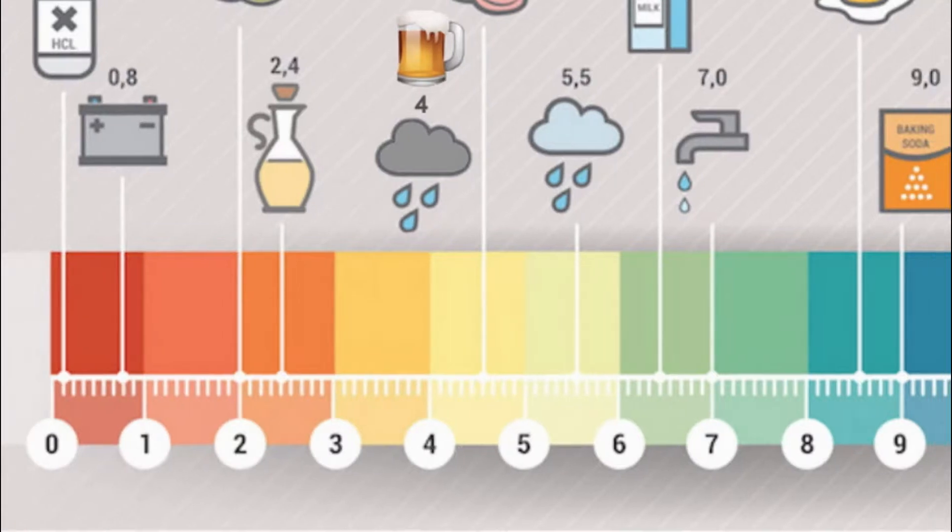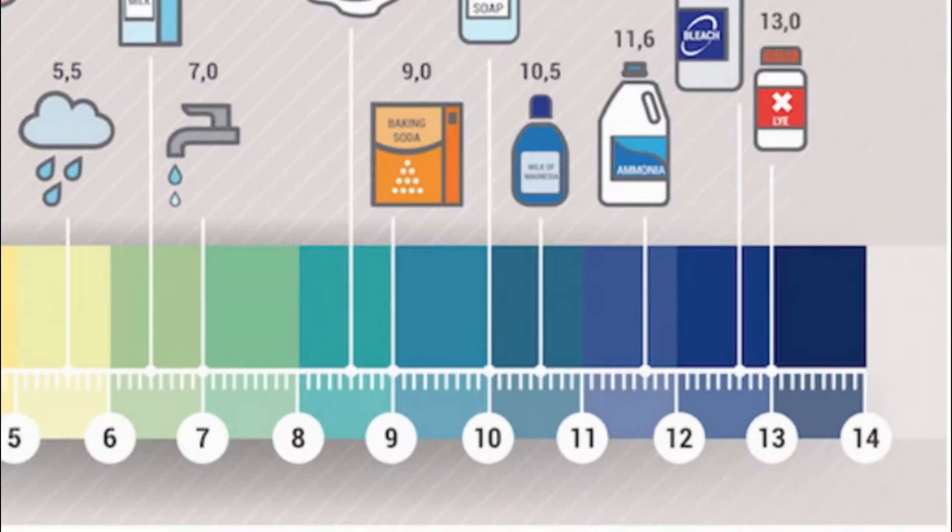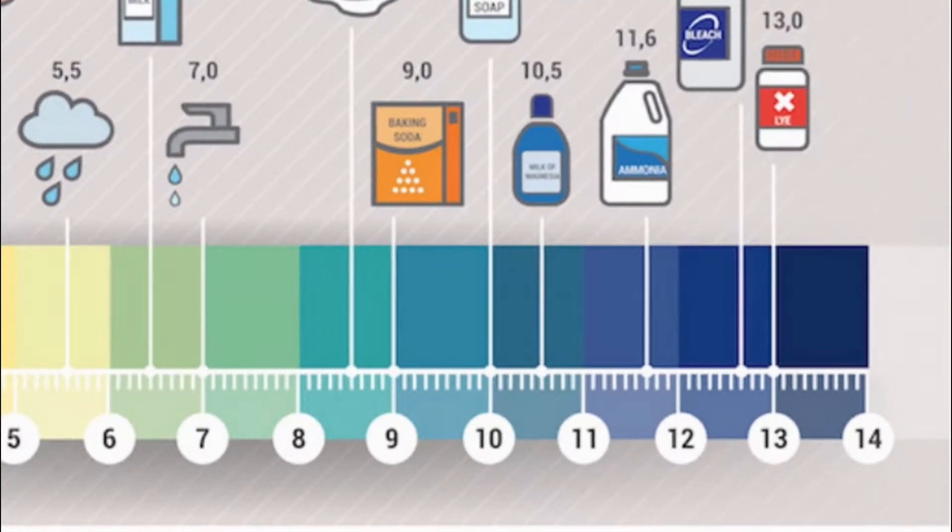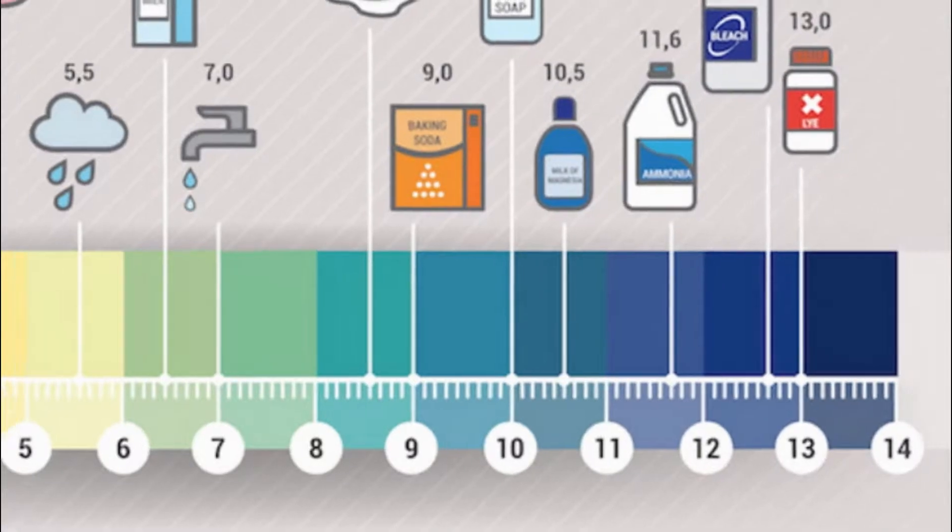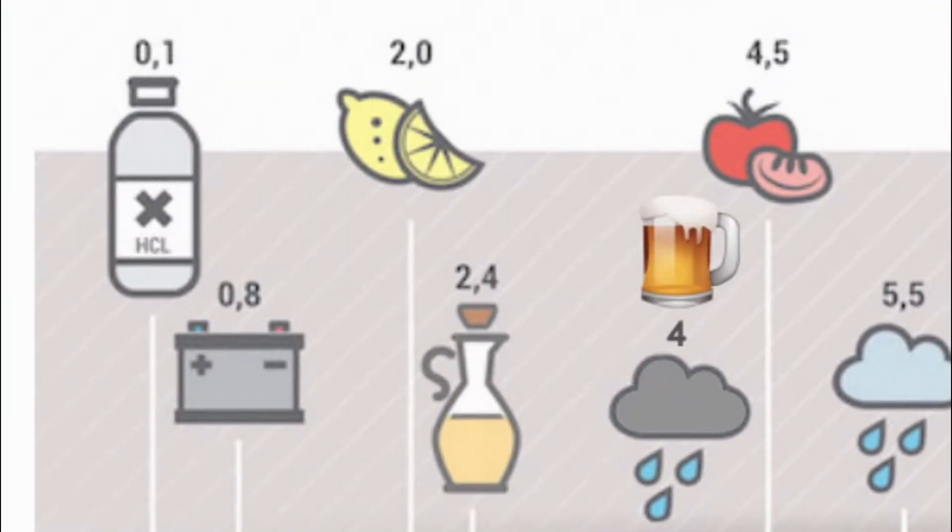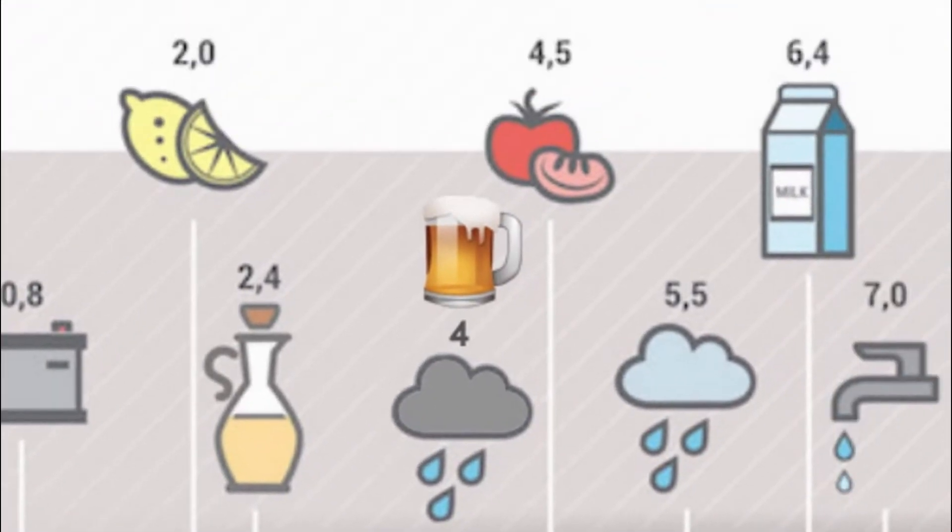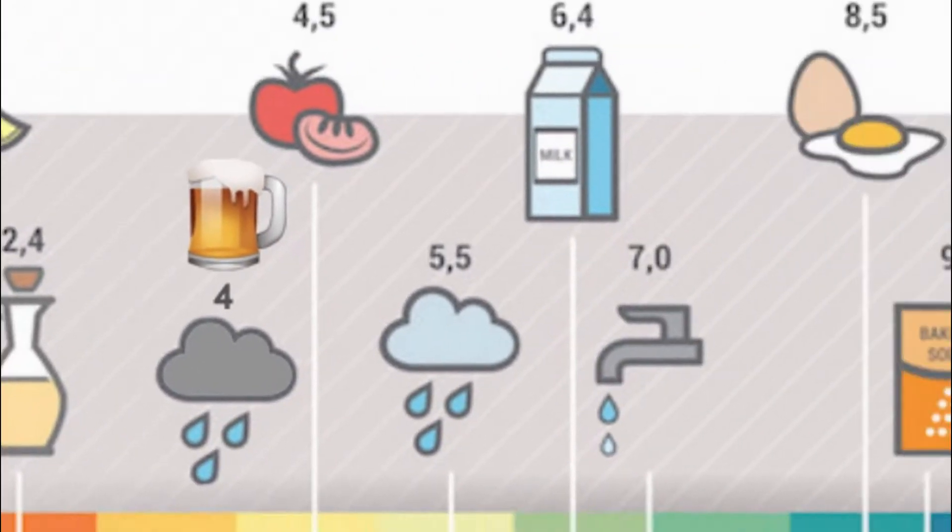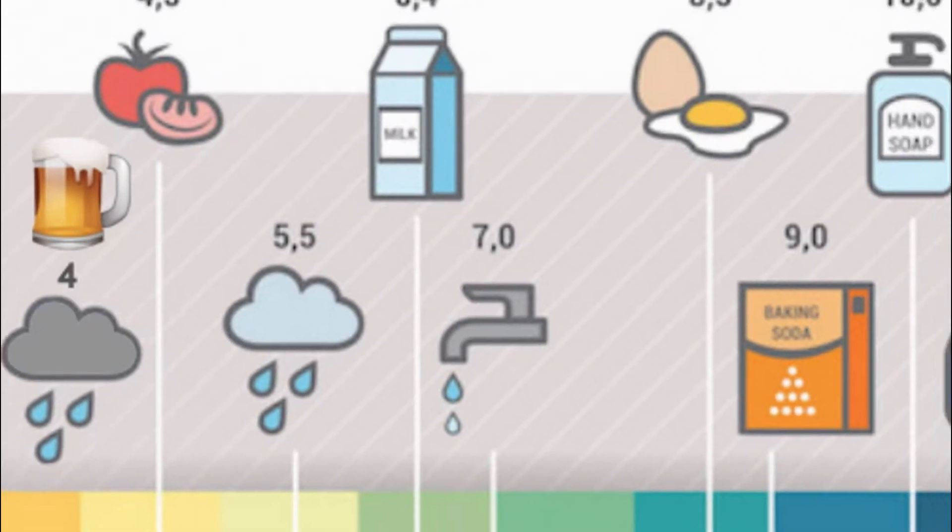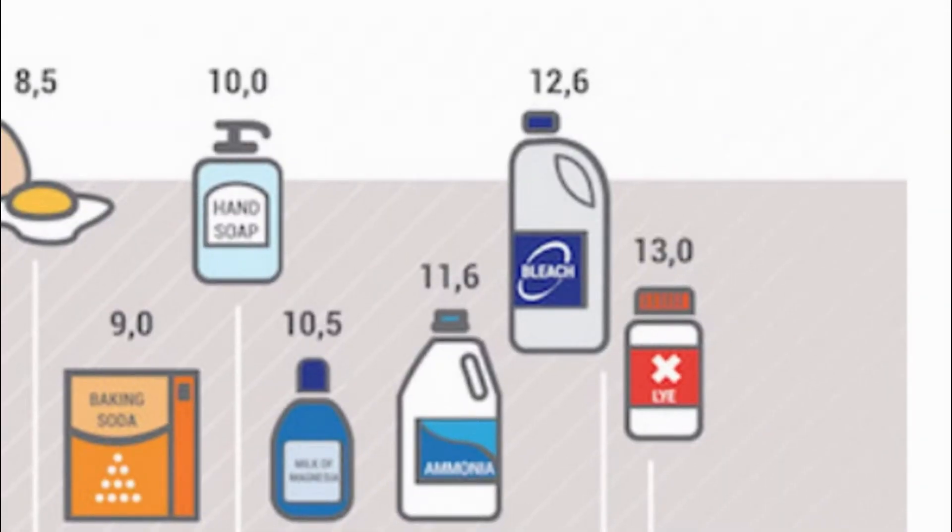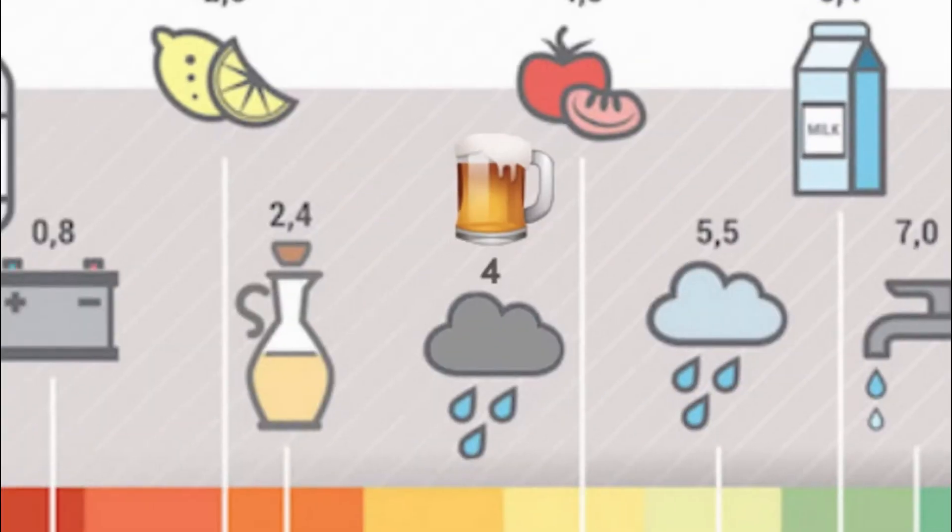To compare, pH values range from 0 to 14, 0 being most acidic and 14 being most alkaline. pH value of hydrochloric acid used for batteries is 0.8, vinegar is 2.4, beer is around 4, 7 is neutral, and bleach is around 12.6. So acid rain has a pH level closer to beer.